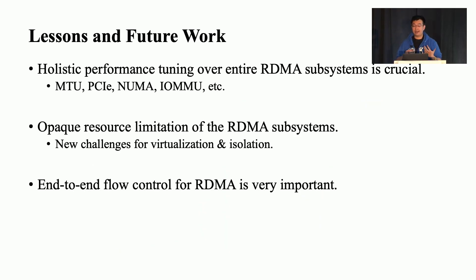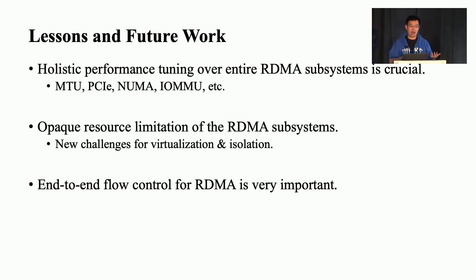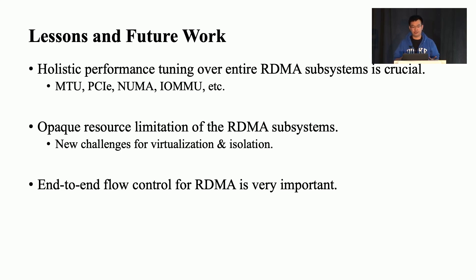We also share some lessons and potential future work. The first is that holistic performance tuning over the entire RDMA subsystem is very crucial. There are many low-level configurations such as MTU, PCI configurations, NUMA, and IOMMU settings that have a huge impact on end-to-end performance. Our experience shows that for some configurations like MTU, there is no single optimal value for all scenarios. Additionally, our anomalies show that there are many potential bottleneck resources inside RDMA subsystems, bringing new challenges for RDMA virtualization and performance isolation. Lastly, an end-to-end flow control mechanism for RDMA is crucial; otherwise we must rely on the PFC mechanism, which is dangerous in many situations beyond just network congestion.